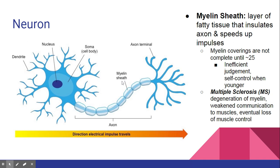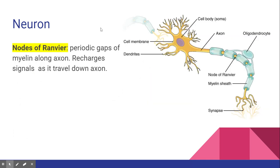Myelin sheath build up over our lives and allow us to process information faster. This is one of the main theories as to why youth have much lower self-control on average — they aren't as good judges when making decisions quickly, because they haven't been able to quickly process risks the same way adults can with increased myelin sheath. A disorder to recognize related to myelin sheath is multiple sclerosis, or MS. MS is due to lack of myelination or myelin sheath deteriorating over your life, eventually causing complete loss of muscle control.